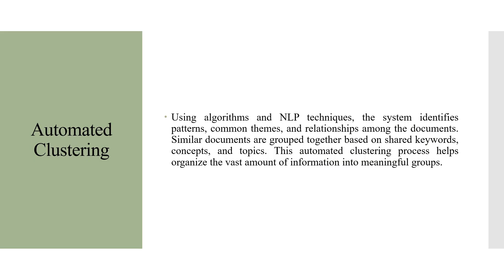The information gathered in open knowledge maps is clustered using algorithms. Using algorithms and NLP techniques, the system identifies patterns, common themes and relationships among the documents. Similar documents are grouped together based on keywords, concepts and topics. This automated clustering process helps organize the vast amount of information into meaningful groups.